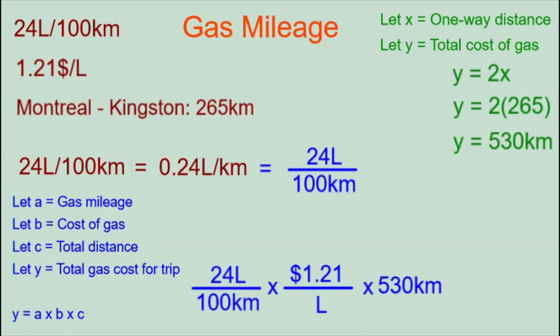When we multiply these, we cancel units. Showing the units is useful because when arranged properly in the equation, all units cancel except the one needed for the final answer. Liters on top and liters on the bottom cancel. Kilometers on top and kilometers on the bottom cancel. All that's left is the dollar sign. Multiplying 24 × 1.21 × 530 and dividing by 100 gives us $153.91.